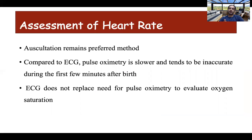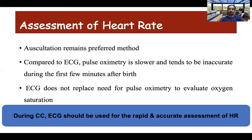The best assessment of effective positive pressure ventilation is done by assessment of heart rate, and auscultation remains the preferred method. Although ECG is more accurate, its availability is not universal, especially in developing countries. Compared to pulse oximetry, ECG is more rapid and more accurate especially in the initial few minutes after birth. ECG does not replace pulse oximetry for evaluating oxygen saturation, but placement of ECG should be considered for rapid and accurate heart rate estimation during chest compressions.